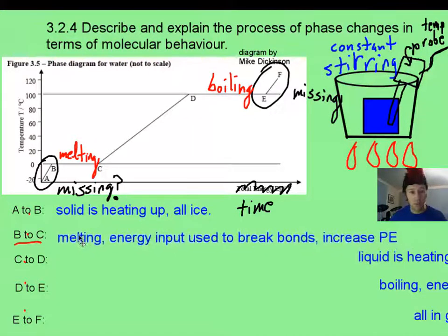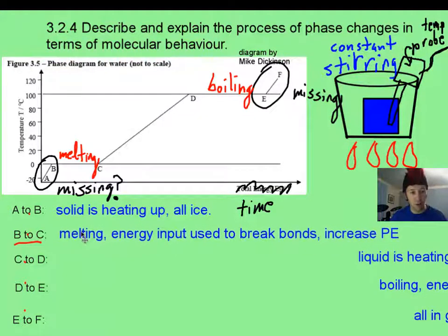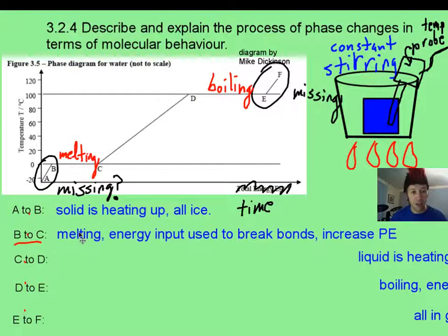Now B to C, which is where you would probably start because it's already going to probably be at zero Celsius, that's when the extra energy that you put in there is going to be breaking bonds and it's going to start the melting process.